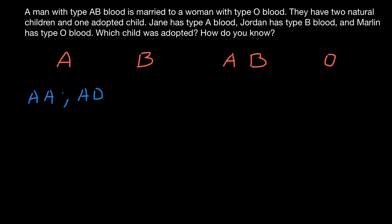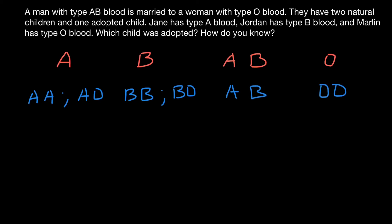Blood group B can also be made by two genotypes: it can be BB or BO. So here we have three alleles: A, B, and O. Allele A and B are co-dominant, and allele O is recessive to both allele B and A. That's why genotype BO makes blood group B, and genotype AO makes blood group A. Blood group AB is made by only one genotype, which is AB, and blood group O is made by one genotype, which is OO.